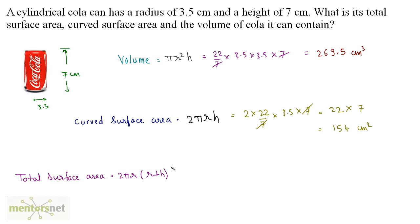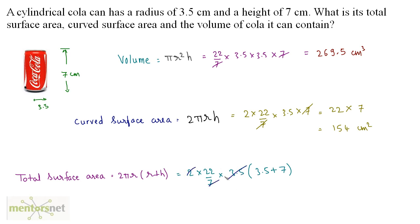Now let us calculate the total surface area using the formula 2πr(r + h). That is 2 × 22/7 × 3.5 × (3.5 + 7). Since 3.5 × 2 = 7, we can cancel the 7 in the denominator, leaving 22 × (3.5 + 7) = 22 × 10.5 = 231 square centimeters. So the total surface area is 231 cm². That is how you solve problems on cylinders.